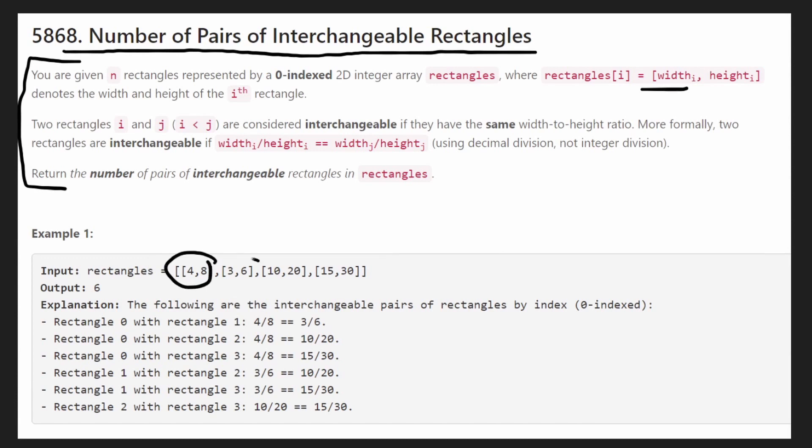So it's best understood with an example and this first example they give us is actually a really good example of illustrating exactly what this problem wants us to do. In this case every single one of these rectangles has the exact same ratio. Width divided by height is 4 divided by 8, that's half or 0.5, and the exact same is true for all of these. 3 divided by 6 is 0.5, 10 divided by 20 is 0.5, 15 divided by 30 is also 0.5. So all of these are interchangeable rectangles. So it's pretty easy to determine if a rectangle is interchangeable or not. We can just take the width divided by the height and then keep track of how many rectangles we have that have the exact same ratio. We can do that pretty easily with a hash map.